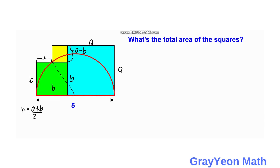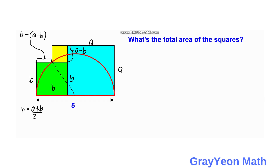Next, we consider this horizontal length. This is actually b minus (a minus b), which equals b minus a plus b, giving us 2b minus a.